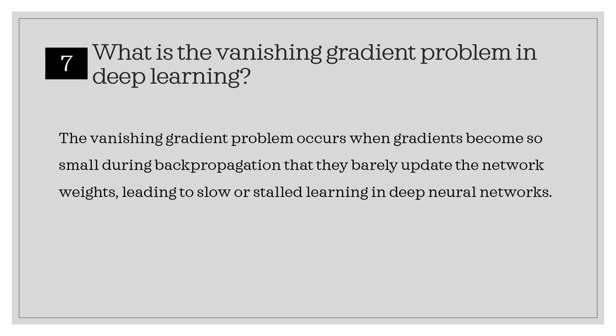What is the vanishing gradient problem in deep learning? The vanishing gradient problem occurs when gradients become so small during backpropagation that they barely update the network weights, leading to slow or stalled learning in deep neural networks.